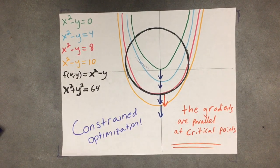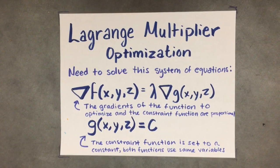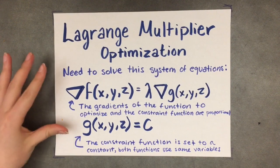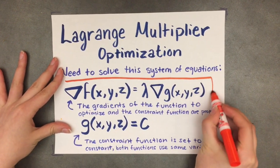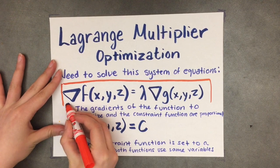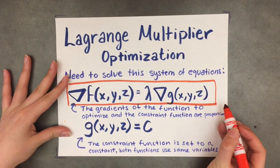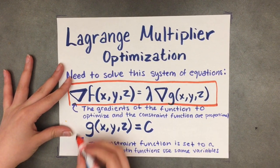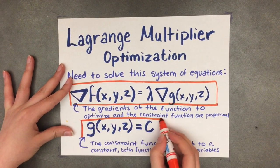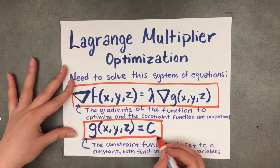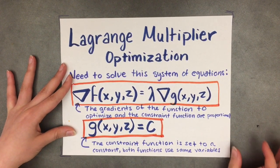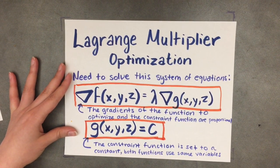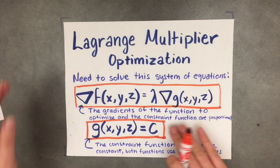The technique that uses the fact that these gradients are proportional to each other is the Lagrange multiplier optimization technique. For this technique you need to solve a system of equations. The first equation says that the gradients of the function you want to optimize and the constraint function are proportional. The second important equation says the constraint function must be set to a constant, and both functions must use the same variables. The proportionality constant is represented by the symbol lambda, and that is the Lagrange multiplier.